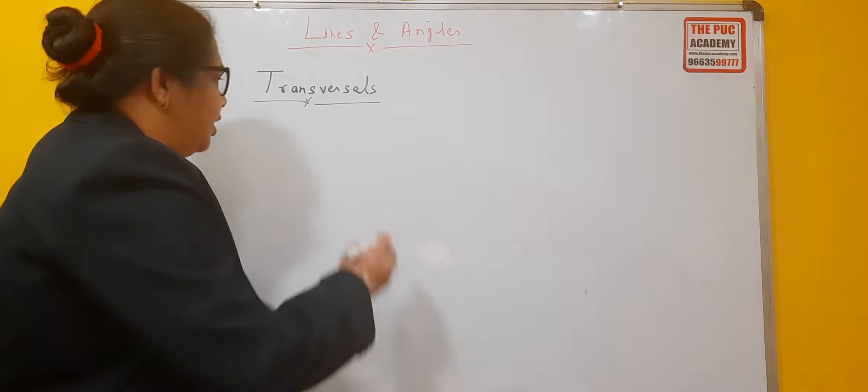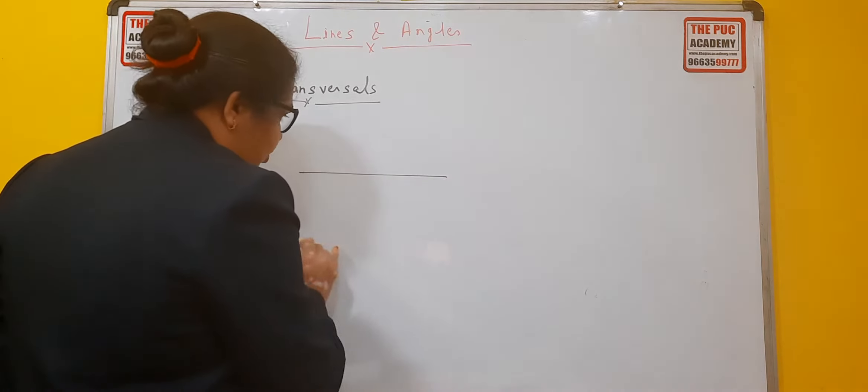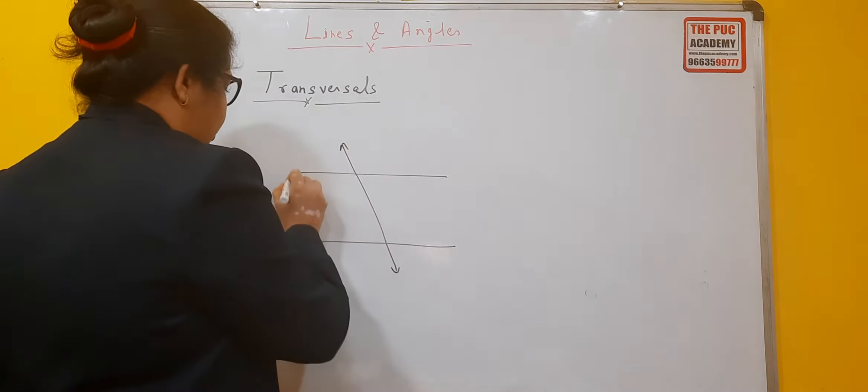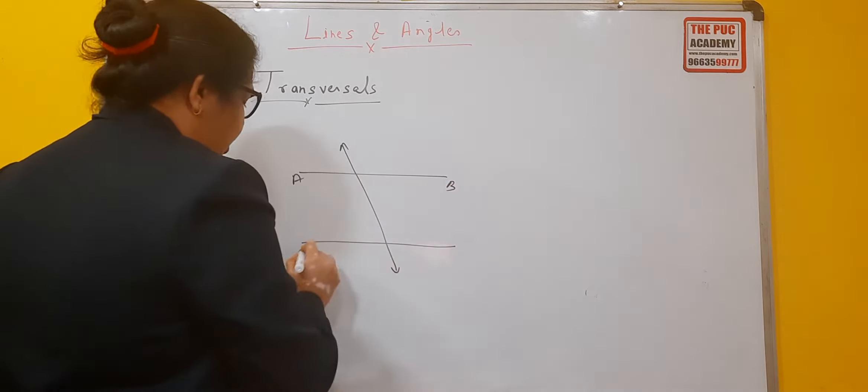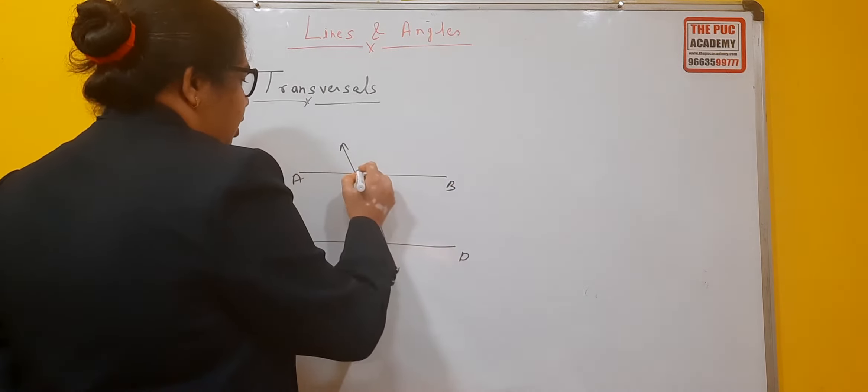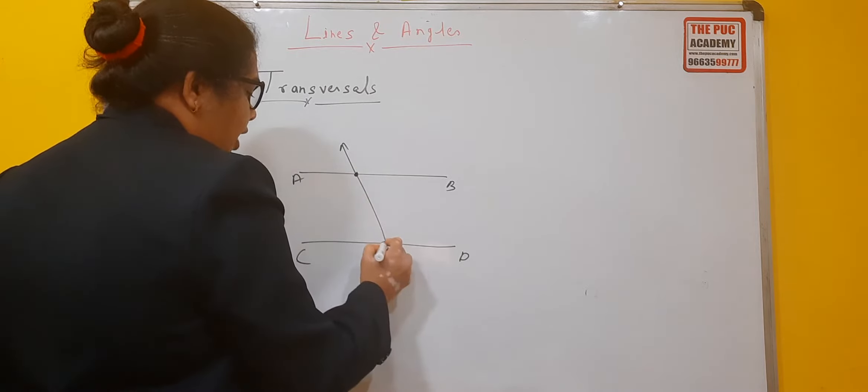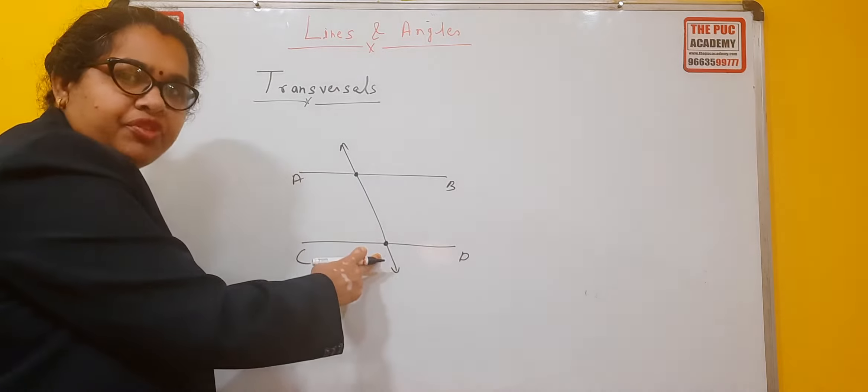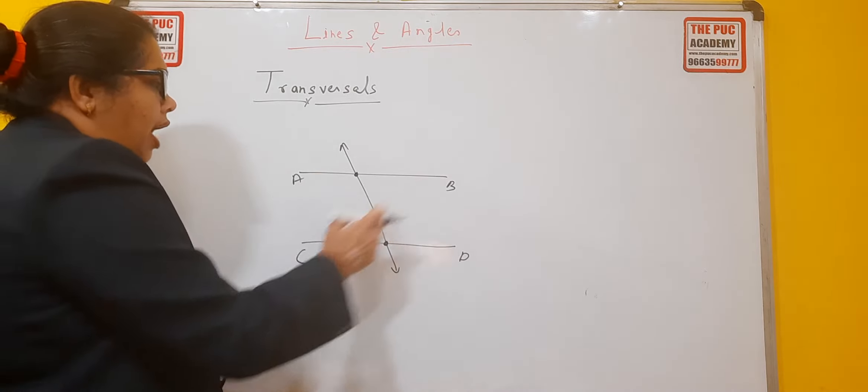So we will see an example here. As I have told you, this is the transversal. A, B, C, D. It intersects here and intersects here. Different lines at different points.